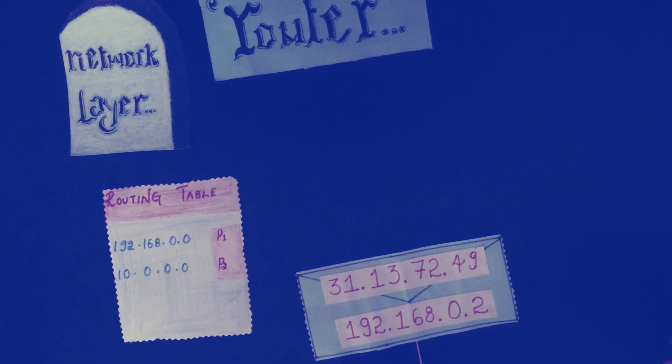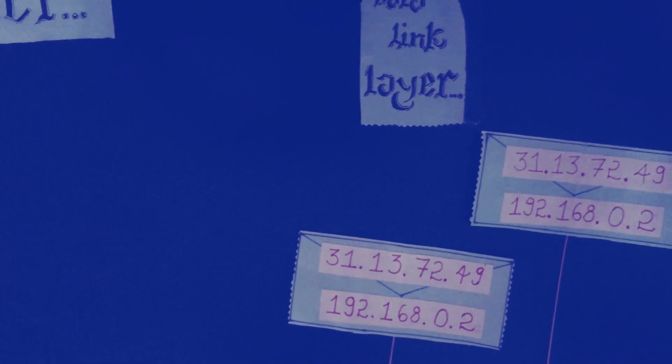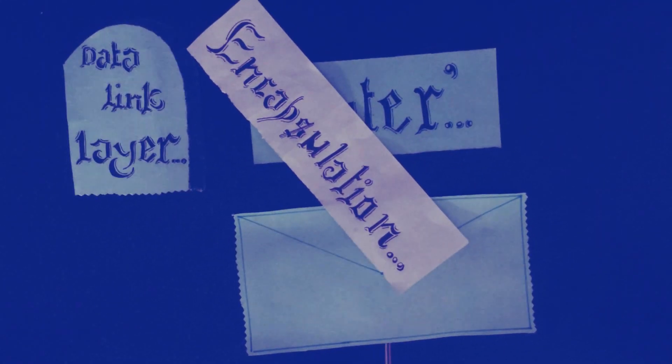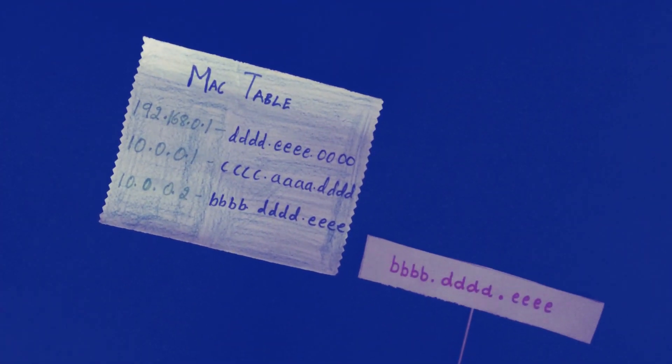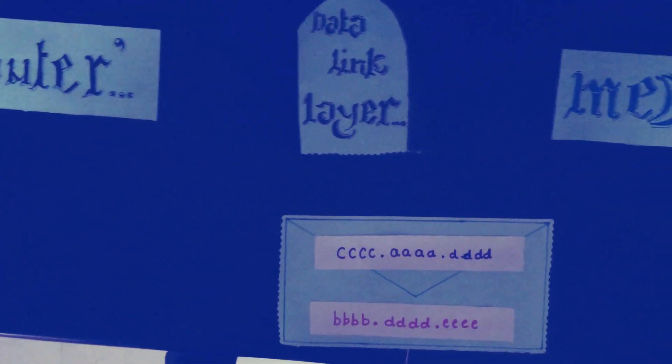The packets now reach the data link layer. The IP address information is not removed or changed until it reaches the destination. Based on the MAC table, the addresses of the source and destination are added to the packets. Packet one from the data link layer, through the media, reaches the receiver.